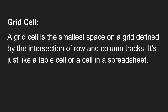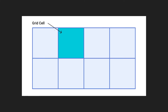A grid cell is the smallest space on a grid, defined by the intersection of row and column tracks — just like a table cell or a cell in a spreadsheet. Looking at the diagram, this small box is called a grid cell. So while a grid track is the space between two adjacent grid lines, the smallest individual box formed is called a grid cell.